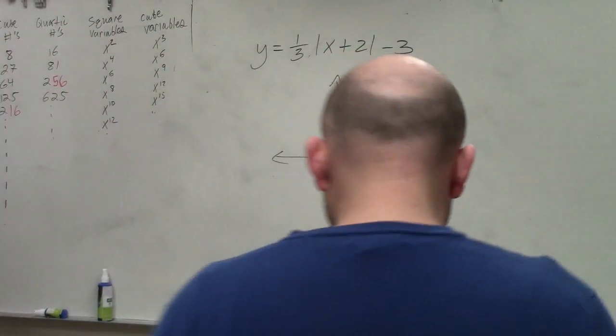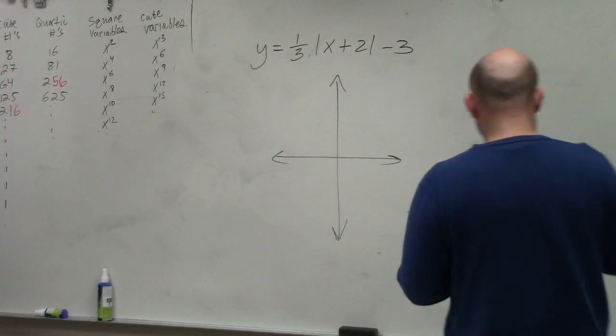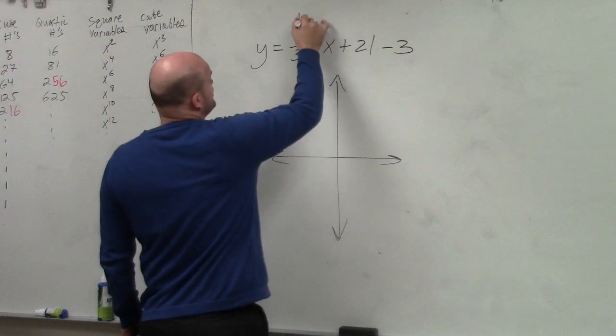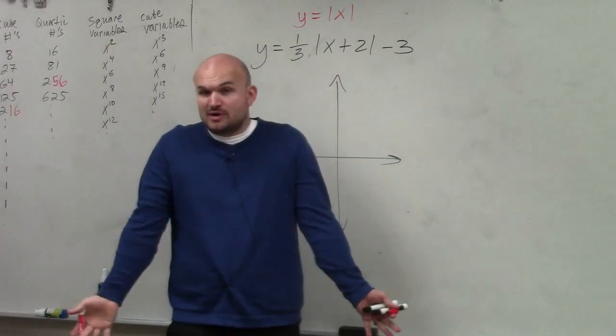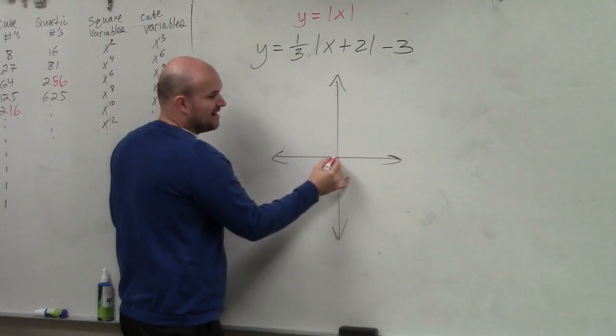When graphing absolute value functions, the most important thing is knowing what the absolute value function looks like. It's a V-shaped graph.